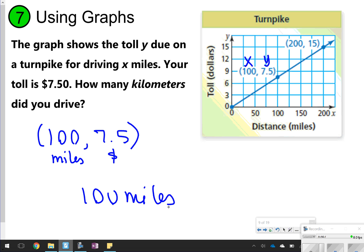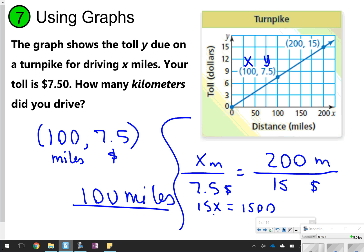If you weren't sure, you could use another point on the graph, like 200 miles over $15 is equal to x miles over $7.50 because you don't know the mileage. And then cross-multiply, 15x is equal to whatever 200 times 7.5 is, 1,500, and then when you divide, you still get 100. Okay, so that's just another way you could do it.